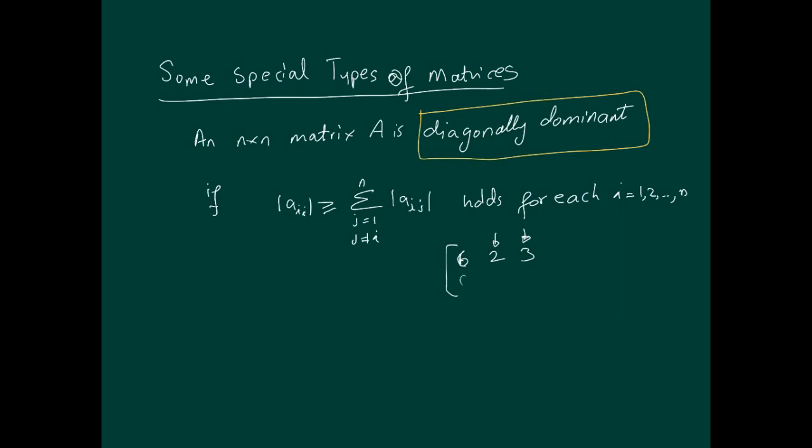We move to the second row, and we have 0, 1, 0. This is a diagonally dominant row as well. And the last one would be, say, minus 1, 6, and 8. So this row is also fine.